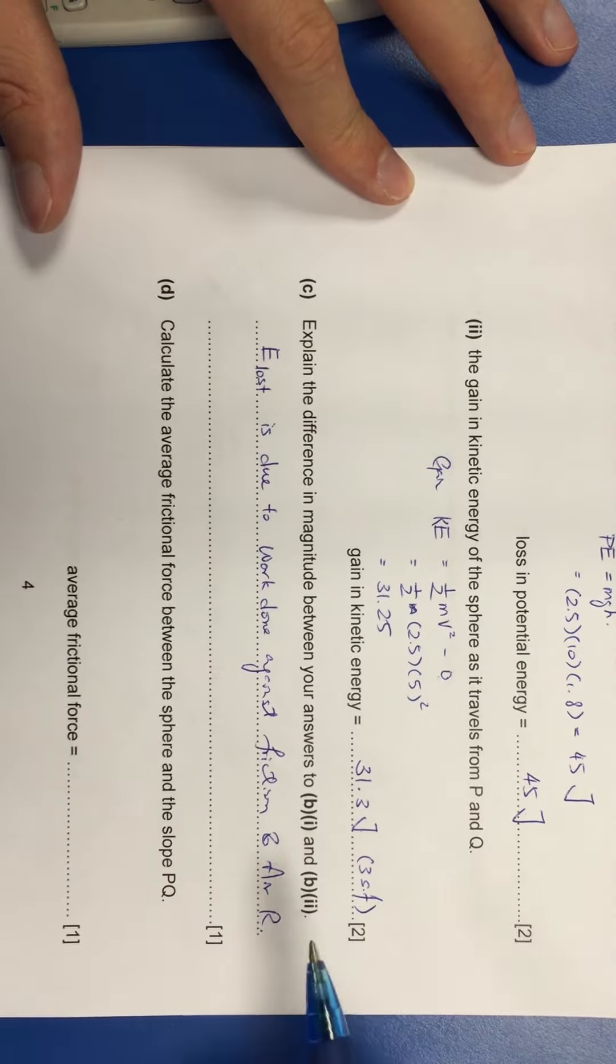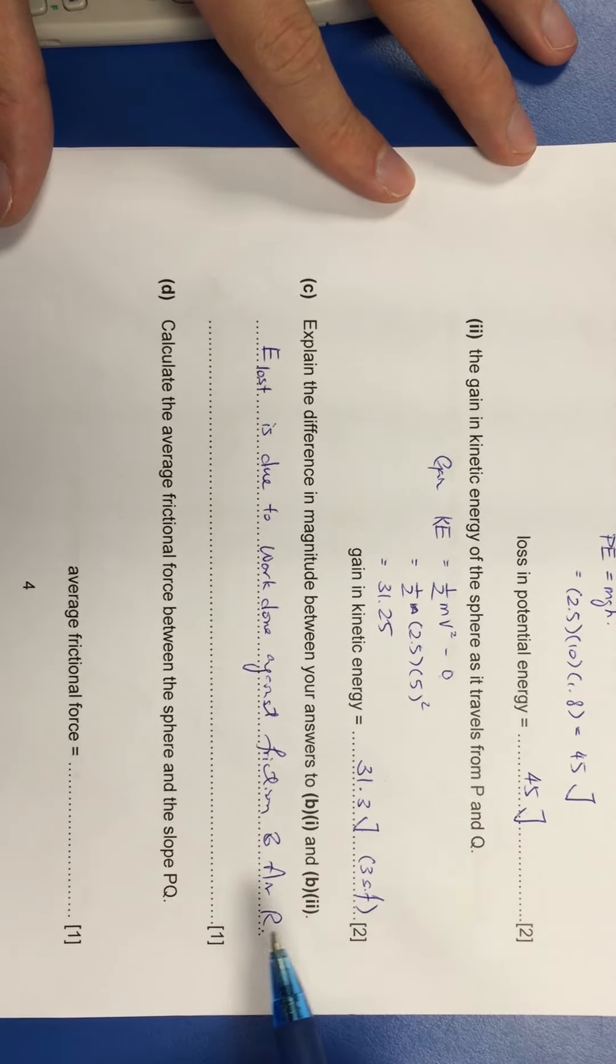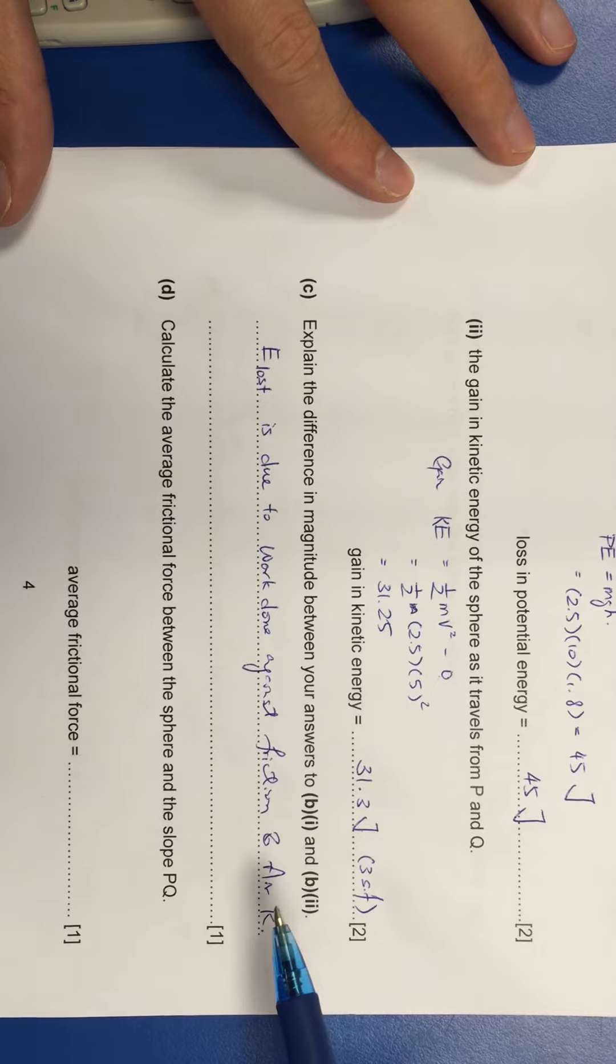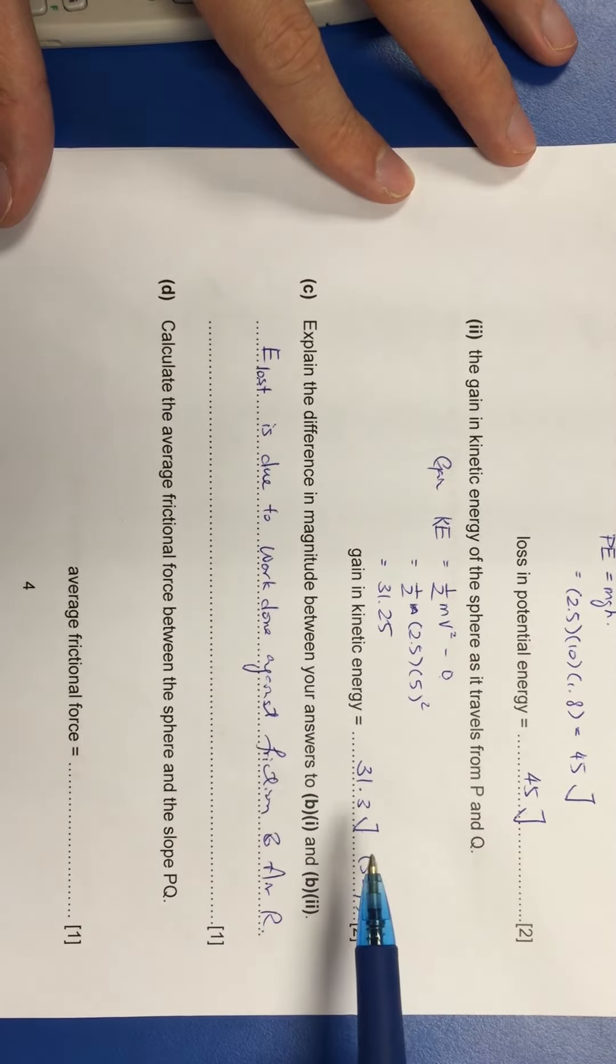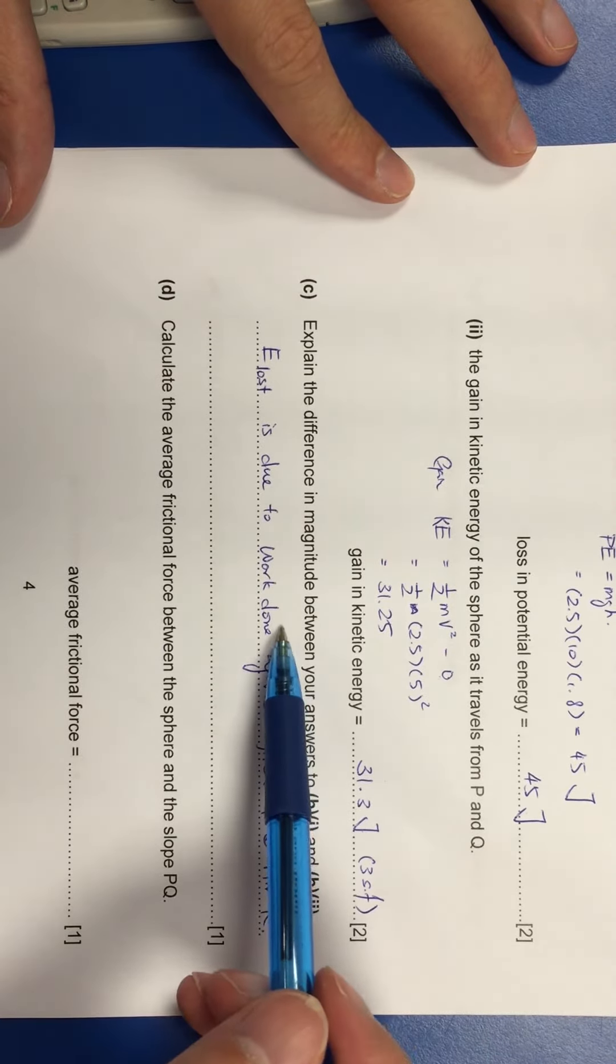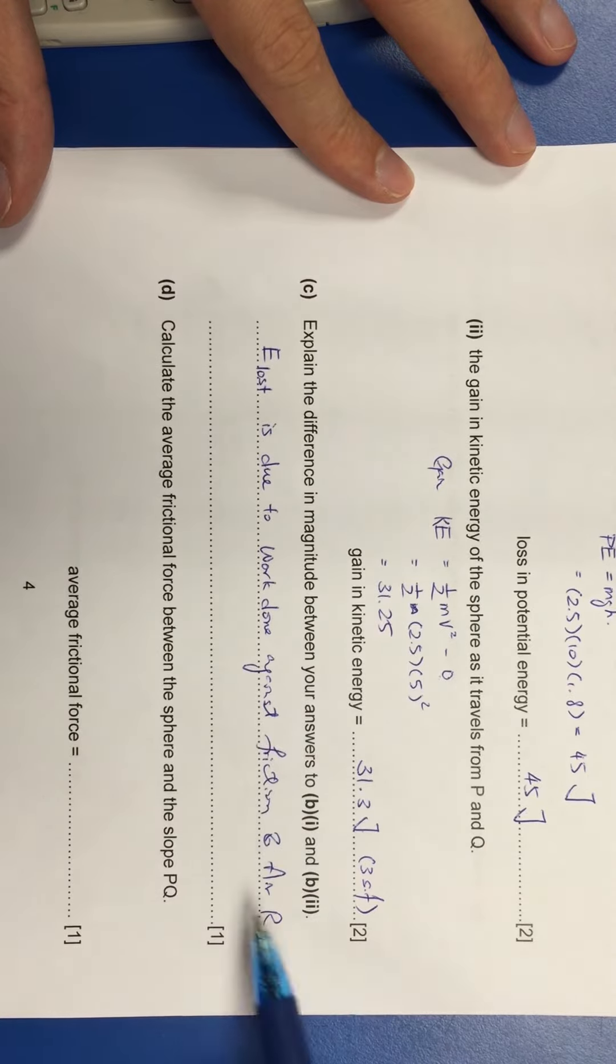That is not a very precise or accurate explanation because energy loss is in joules, friction is in newton. So you must go and put in the work done against what and what.